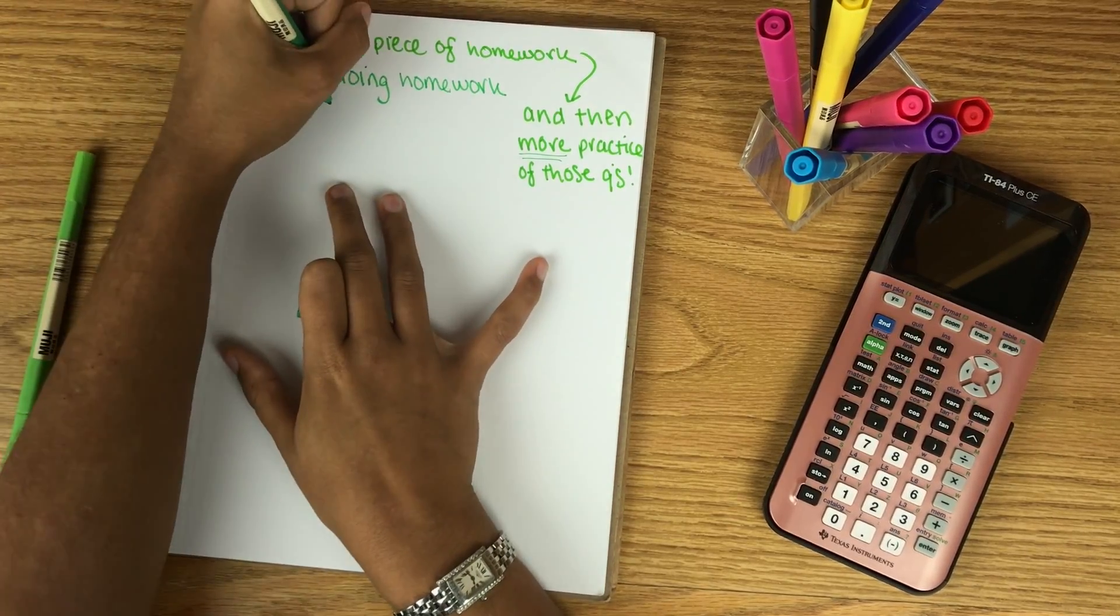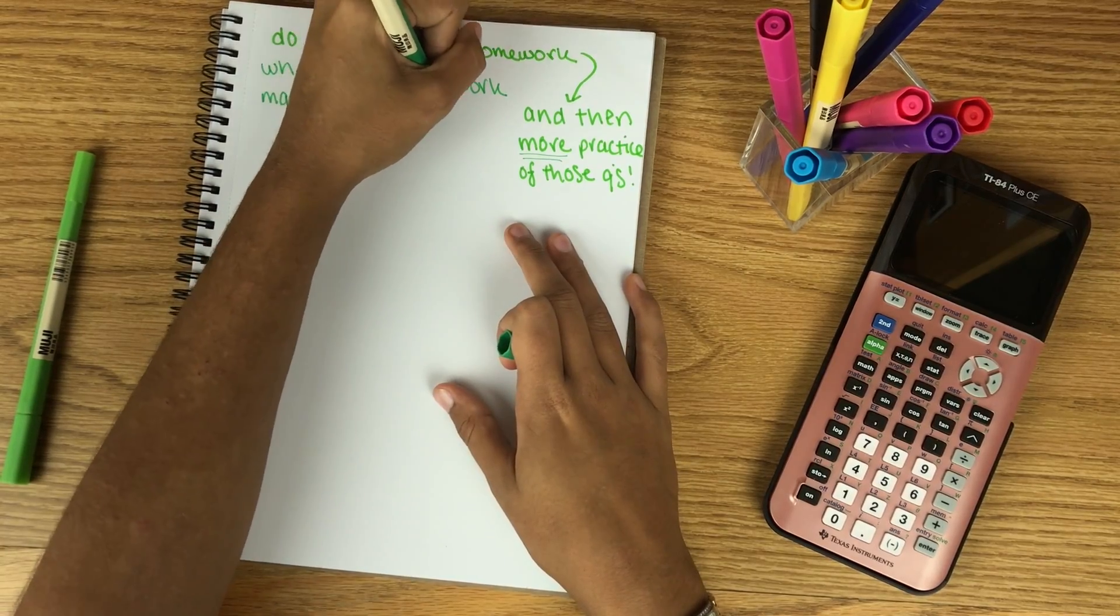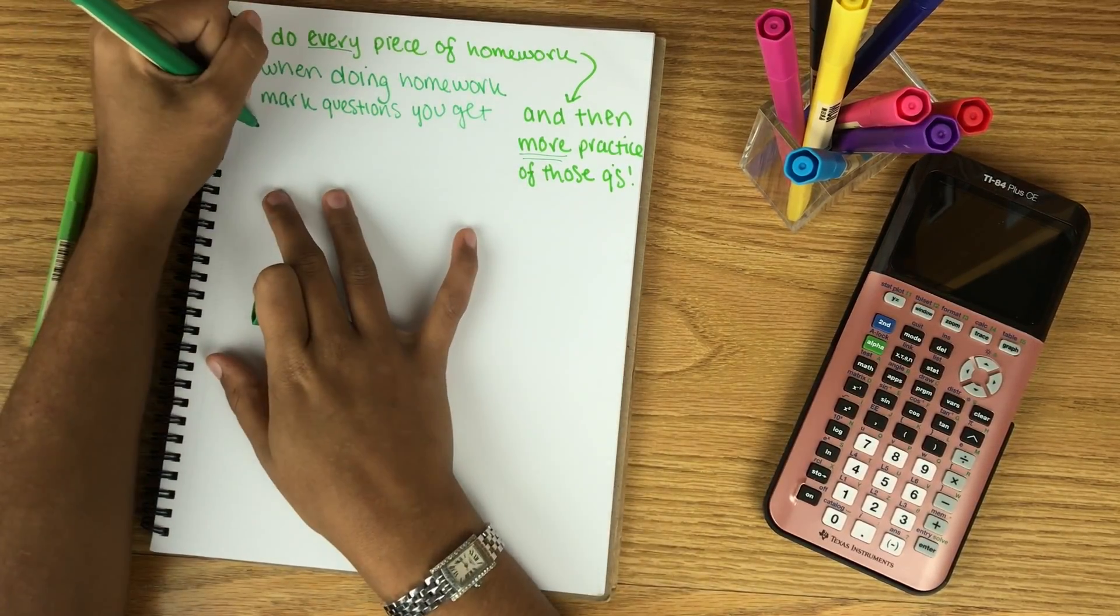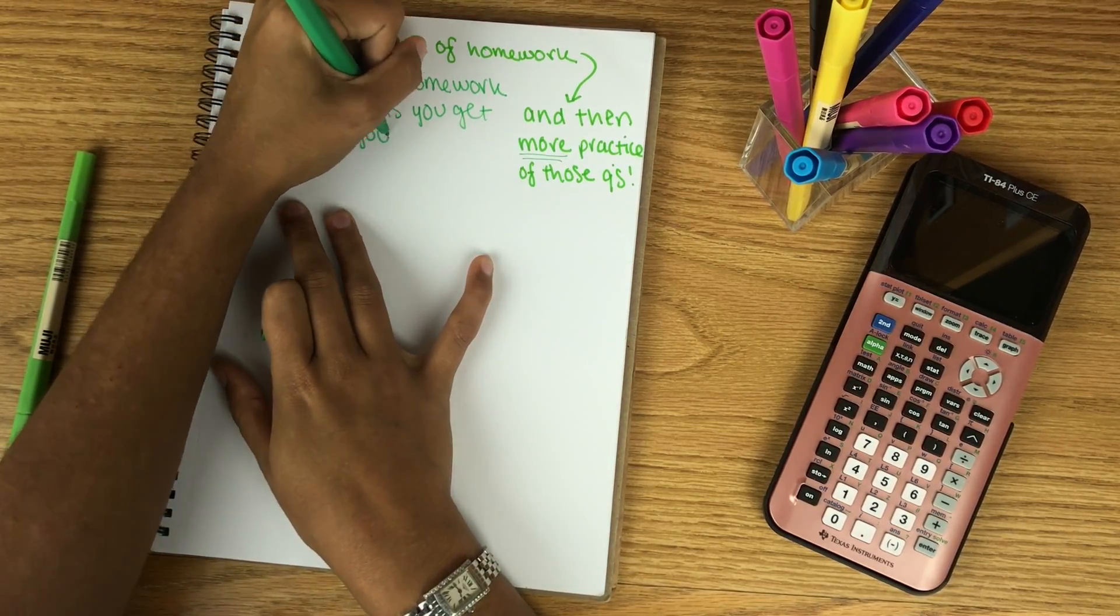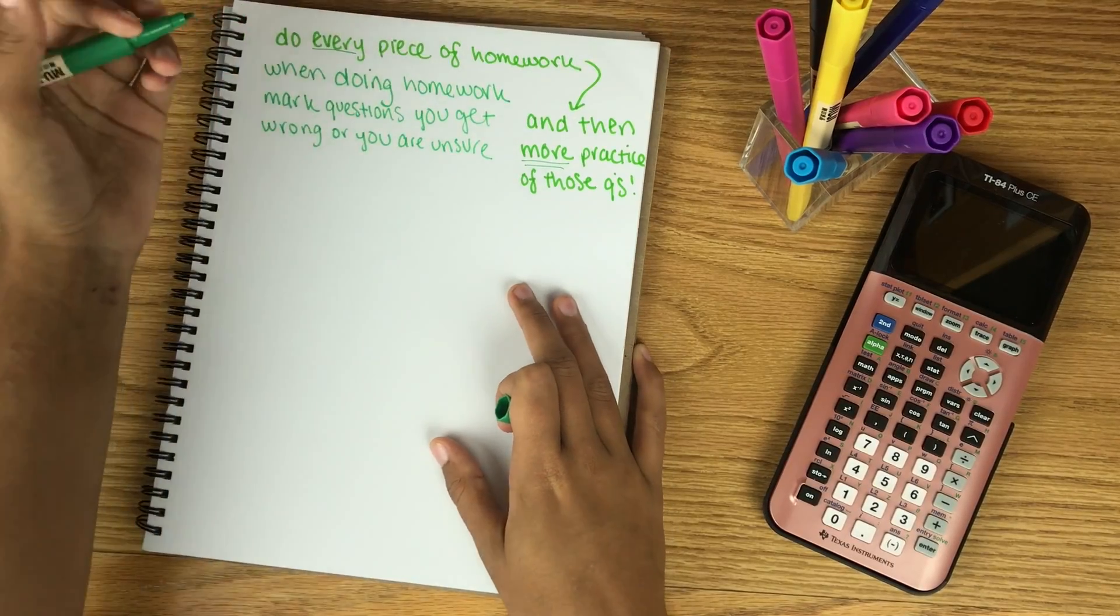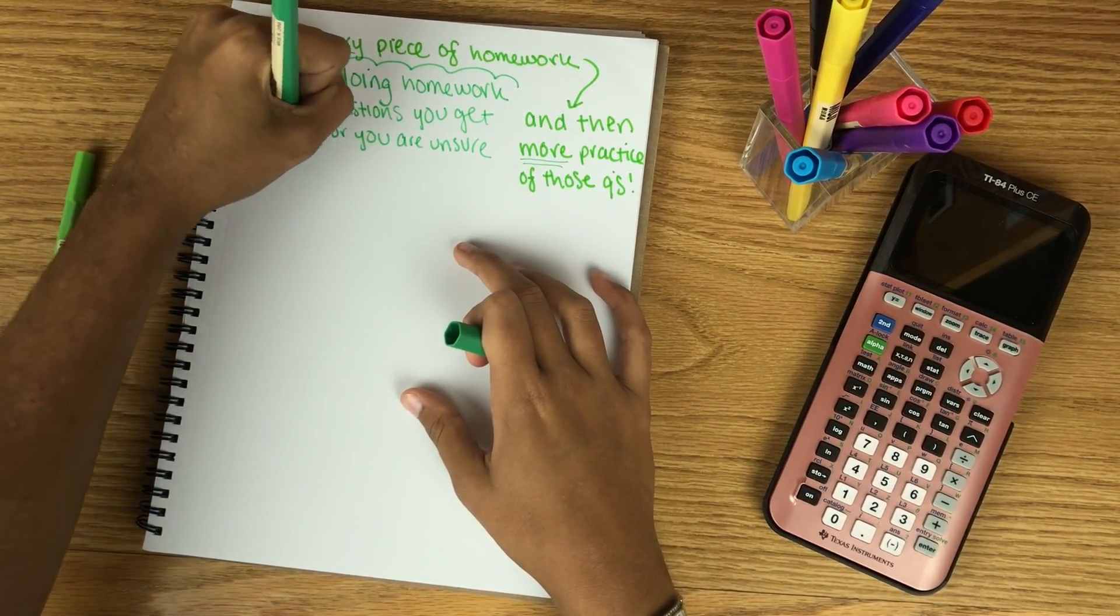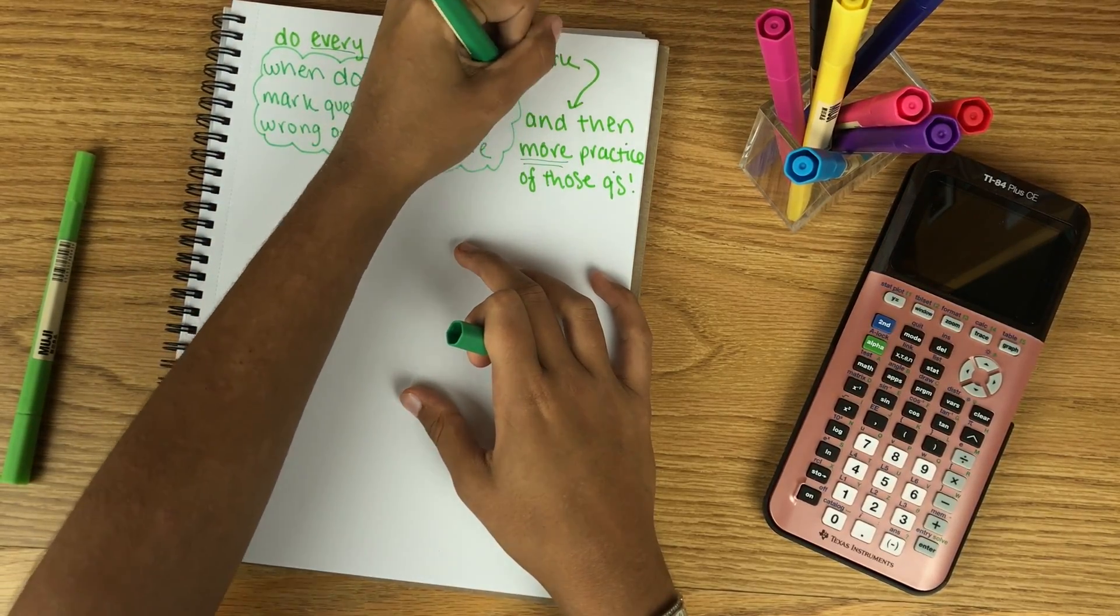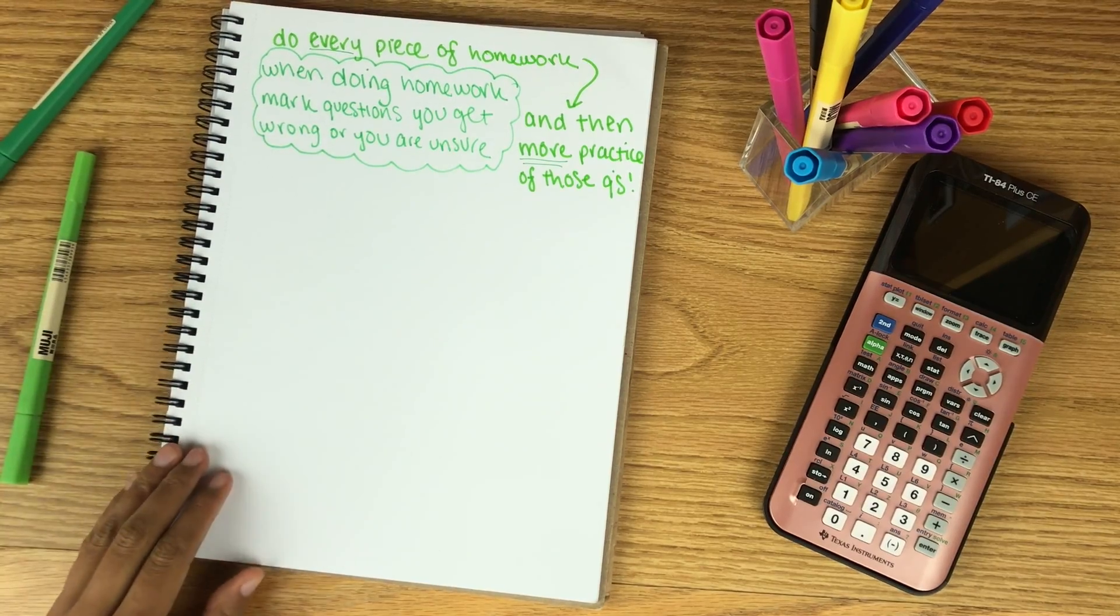In the same vein of doing homework, make sure you are marking all questions that you either get wrong or that you're unsure of. Obviously it's good to do that so that you can go and do that extra practice later, but also so that you yourself know when you go back to study or look over old problems you know where your struggle spots were. Never avoid learning why you're doing something wrong, instead sort of embrace that challenge.